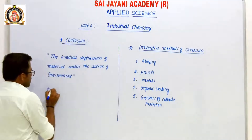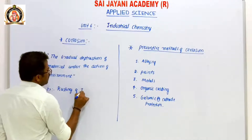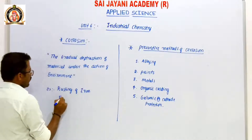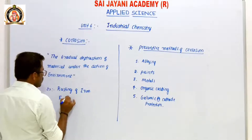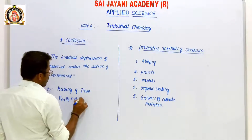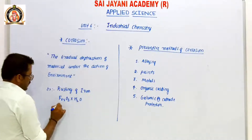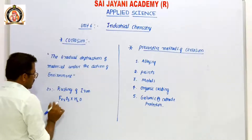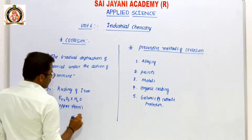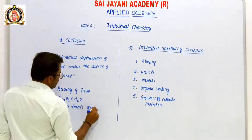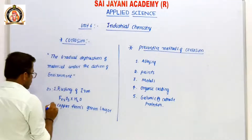Examples of corrosion: rusting of iron, usually represented by Fe2O3·H2O, and green coating of copper — copper forms a green layer.